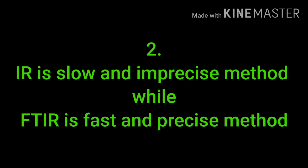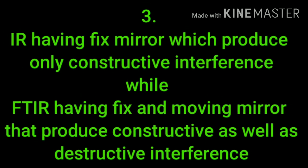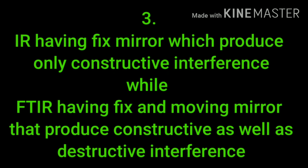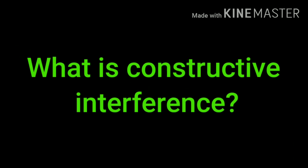The third and most important difference is that IR has a fixed mirror which produces only constructive interference, while FTIR has a fixed mirror and a moving mirror that produces both constructive and destructive interference. Now, the first question that will come to your mind is: what is constructive interference and what is destructive interference?